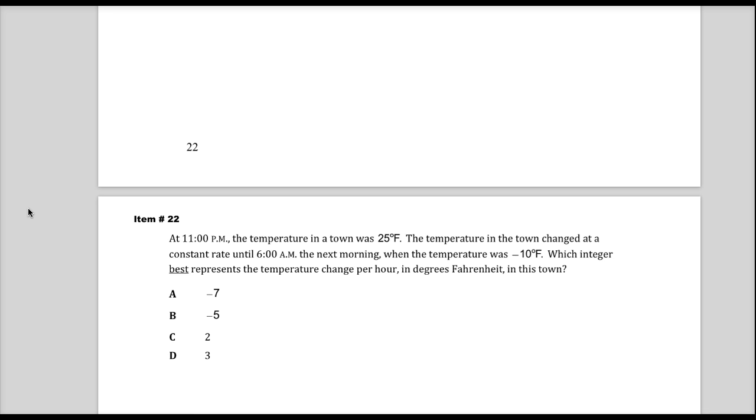The question says, at 11 p.m. the temperature in a town was 25 degrees Fahrenheit, which is below freezing. This is a cold night. The temperature in town changed at constant rate until 6 a.m. the next morning when the temperature was negative 10 Fahrenheit, also cold, extremely. Which integer best represents the temperature change per hour in degrees Fahrenheit in this town?